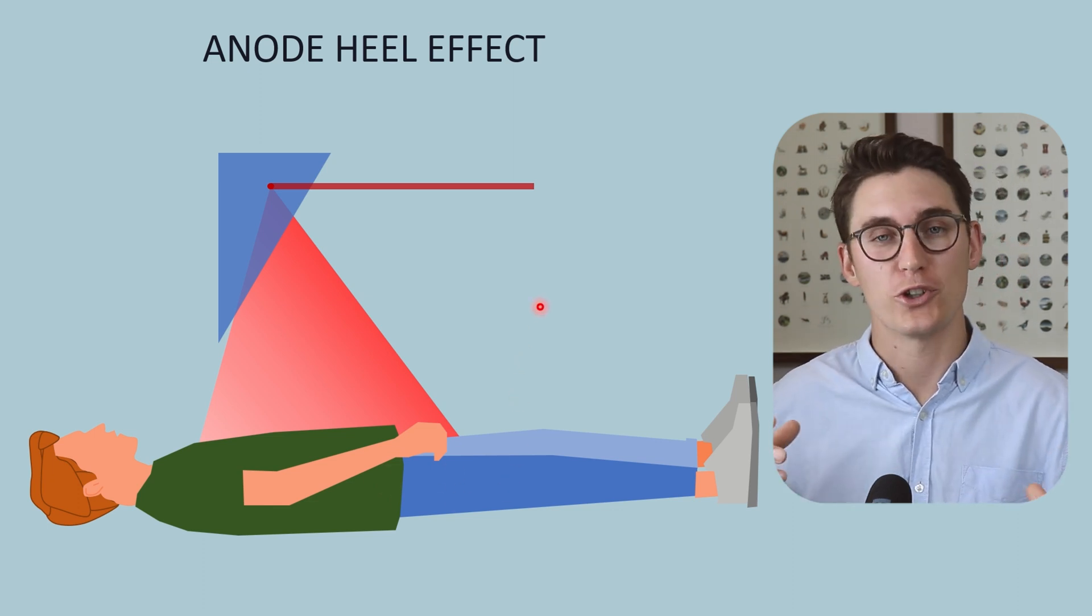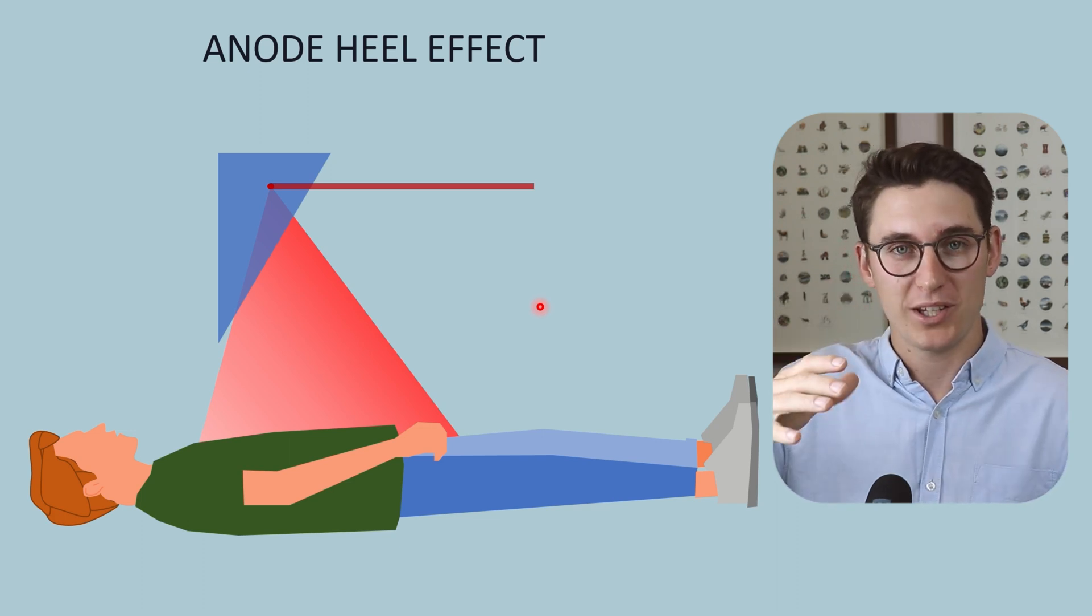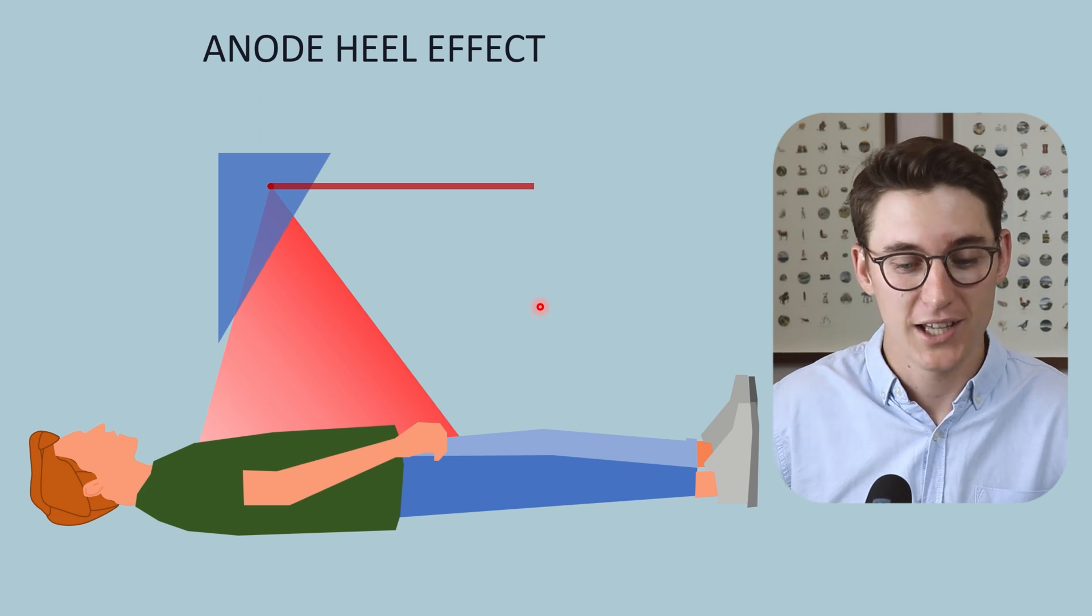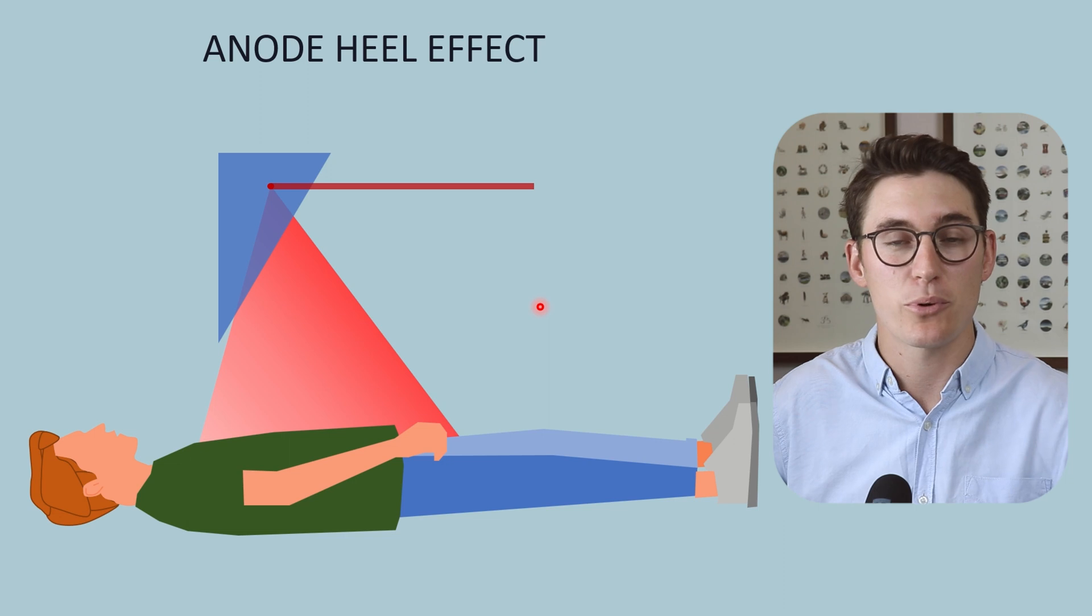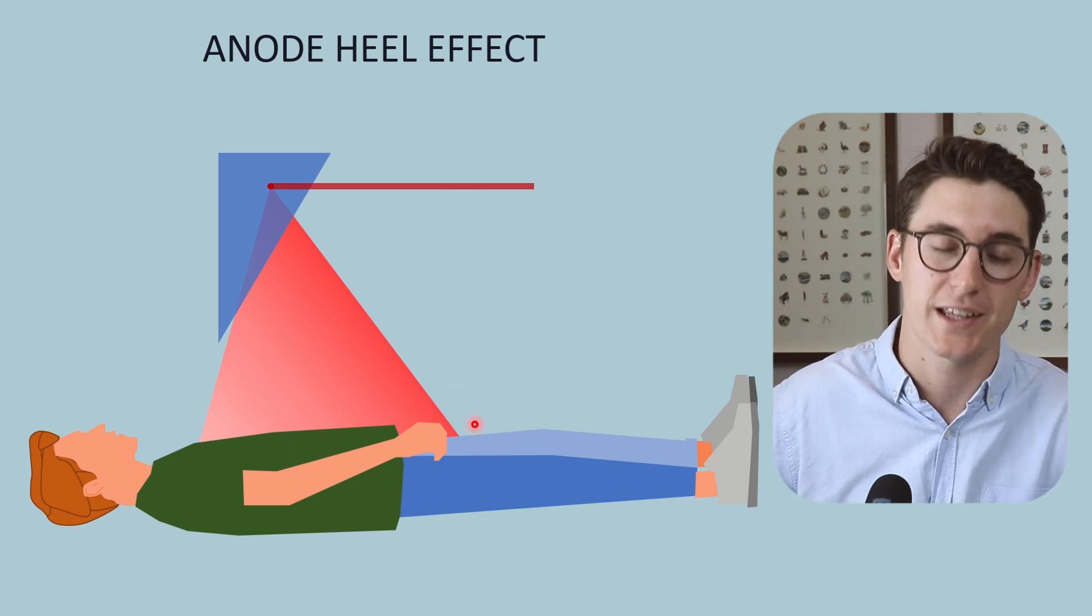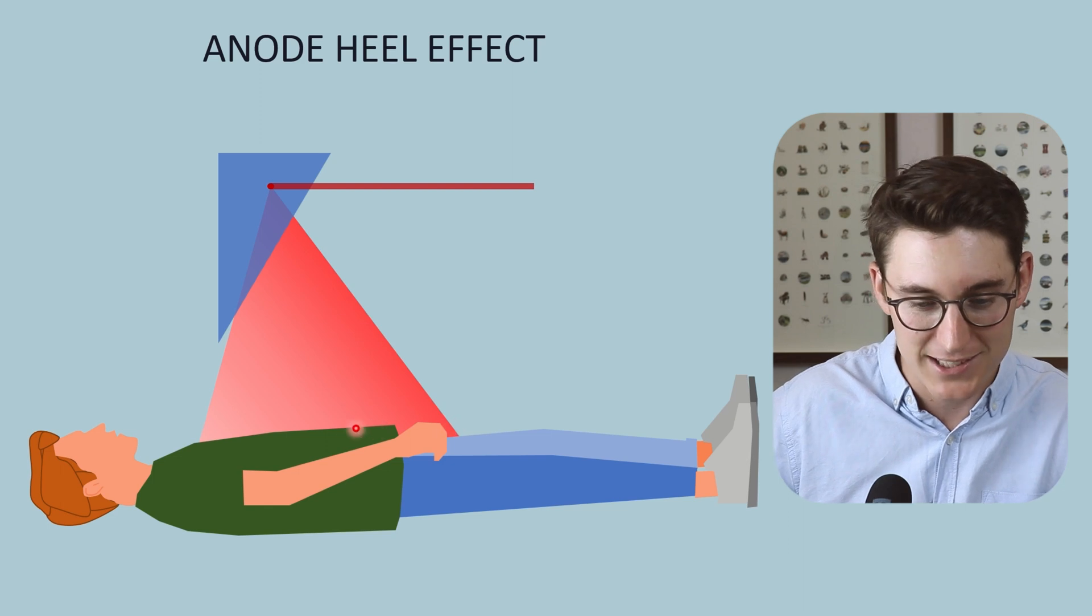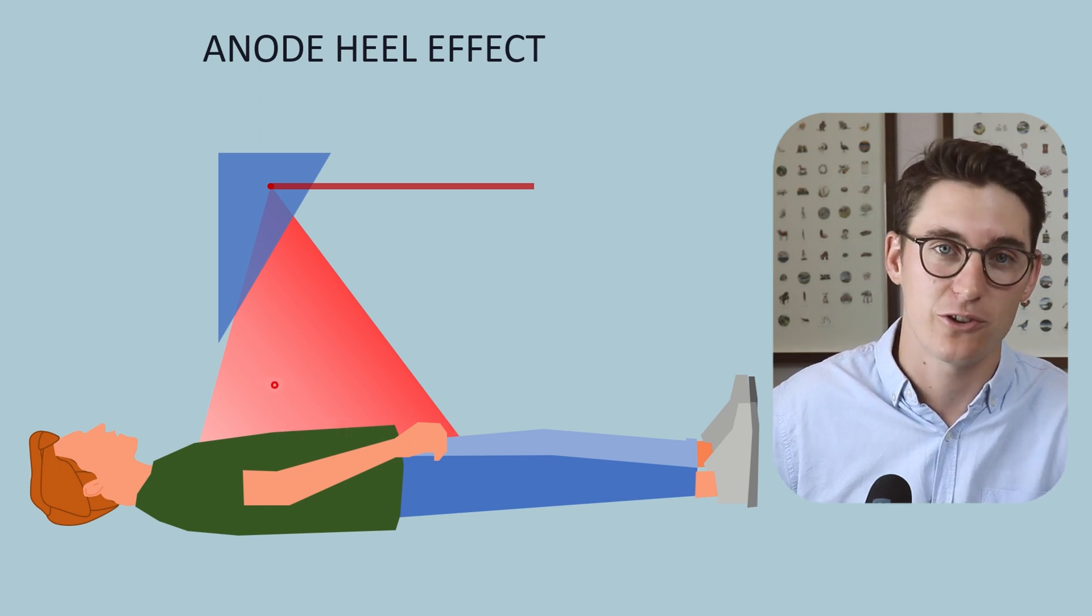This can happen in our foot where our ankle is more dense and more thick than our forefoot and we can place the cathode side of our beam over the ankle. The same happens in mammography where our chest wall is more dense than the periphery of the breast. We can place the dense chest wall on the cathode side of the beam and then as the breast is compressed and gets thinner that goes out towards our anode side of the beam.